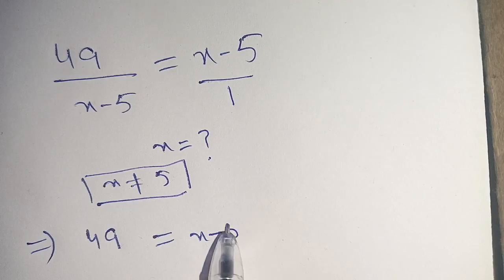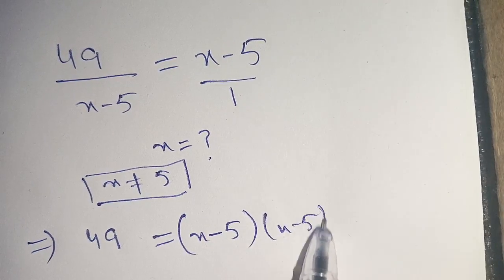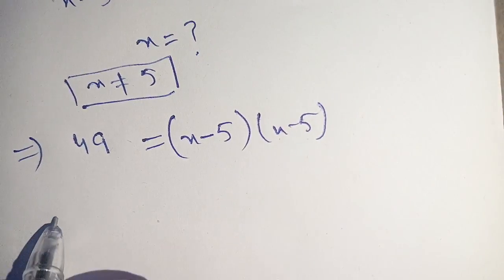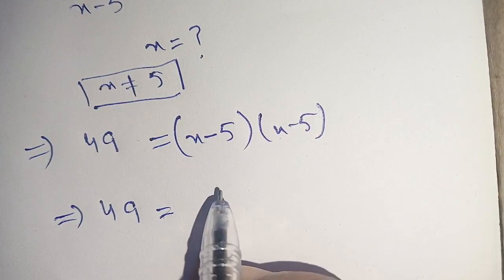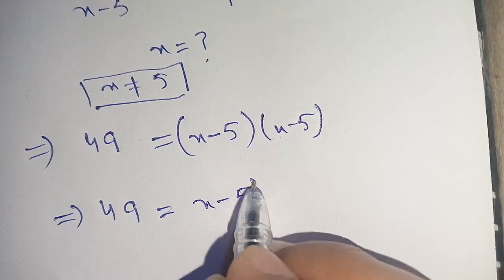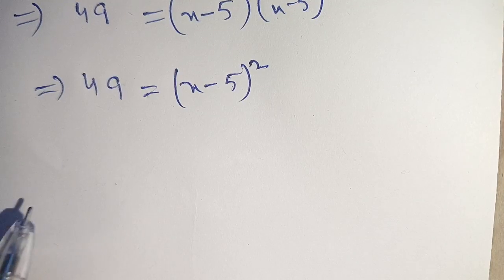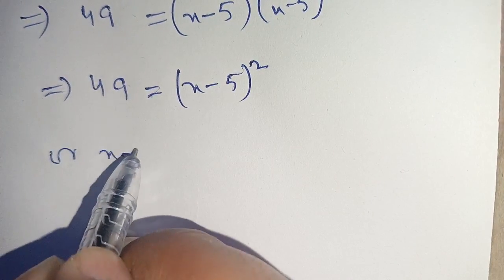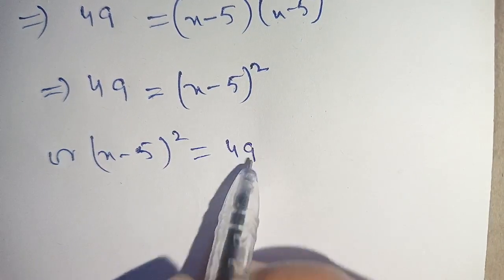Now we can write down x minus 5 times x minus 5 as x minus 5 whole square. So we have 49 is equal to x minus 5 whole square, which we rewrite as x minus 5 whole square is equal to 49.